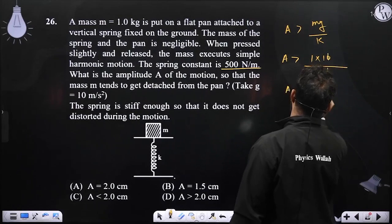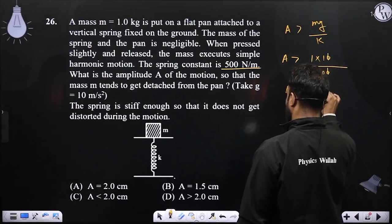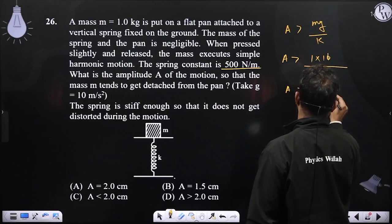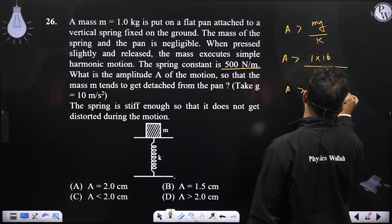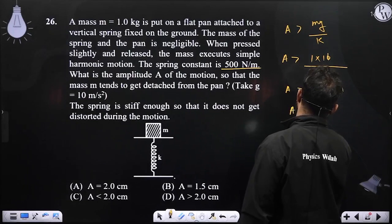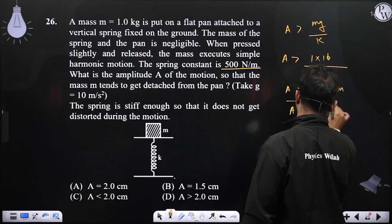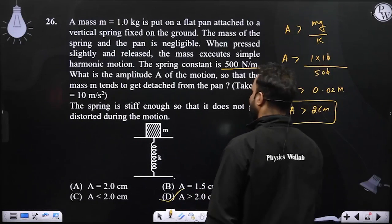A should be greater than 0.02 meter, which means A should be greater than 2 centimeters. So option D is the correct answer.